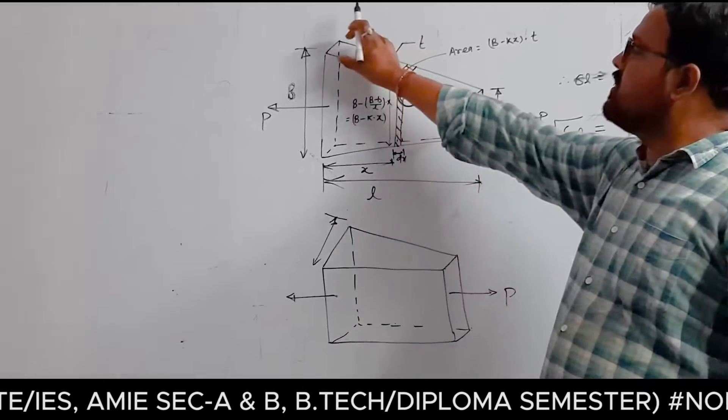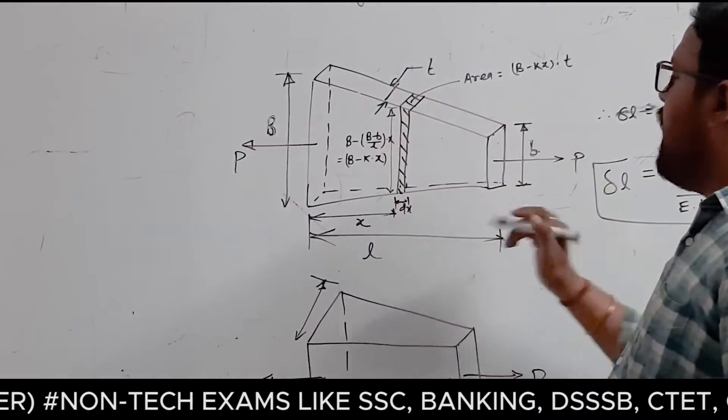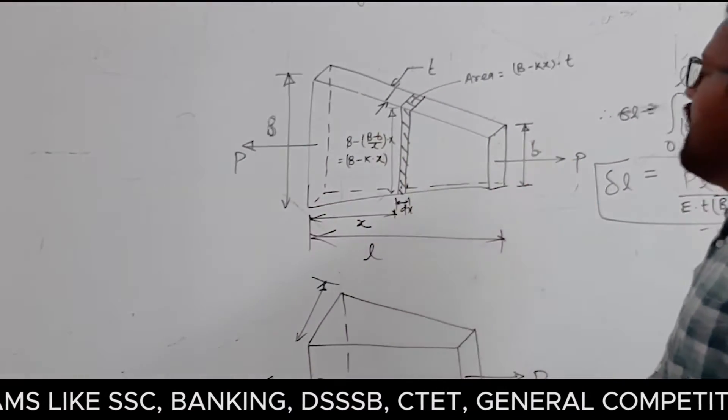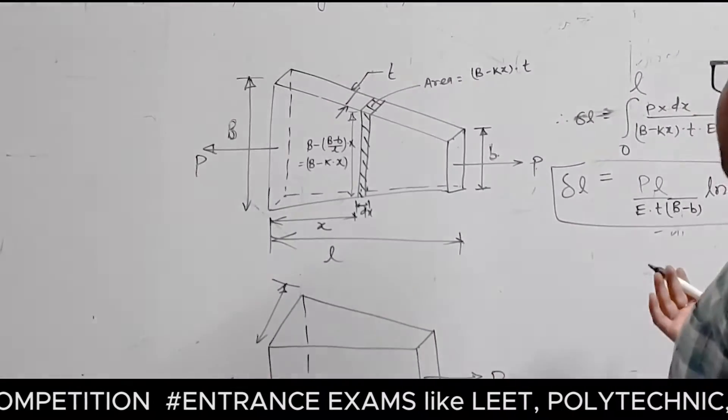Thickness is uniform throughout. Thickness is T, and width is tapered. If you look at this bar and see the deformation, then the same way you can derive it.